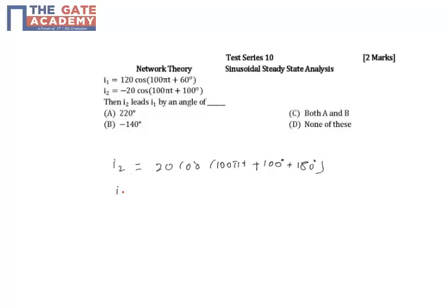So i2 is equal to 20 cos 100 pi t plus 280 degrees. Now i1 is given as 120 cos 100 pi t plus 60 degrees, which means i2 leads i1 by 220 degrees.